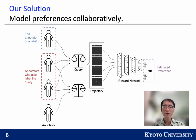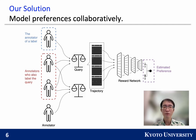The main idea of our solution is to model preferences collaboratively. When modeling the reliability of a preference, our model not only considers the annotator who generates the label, but also other annotators who compare the same pairs of experiences. A label will be more reliable if it agrees with the labels given by credible annotators. The reward network will take the reliability of preferences into account when learning from them.